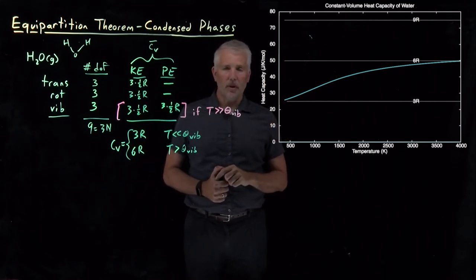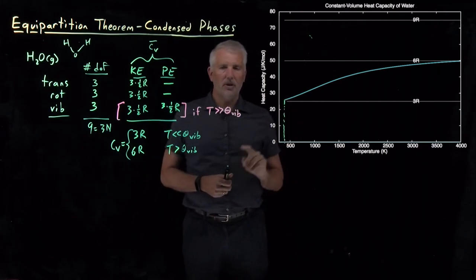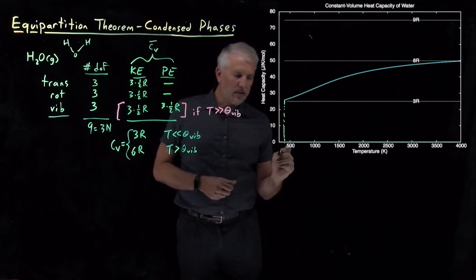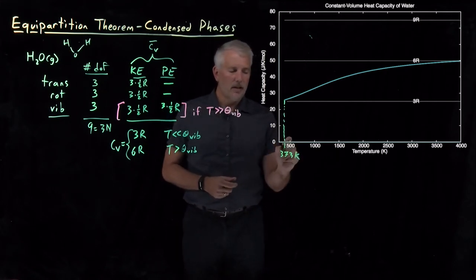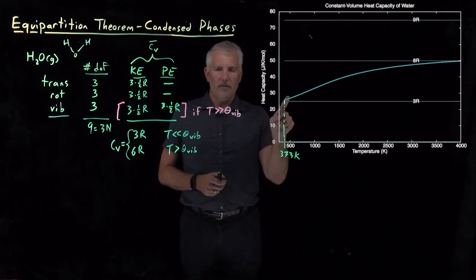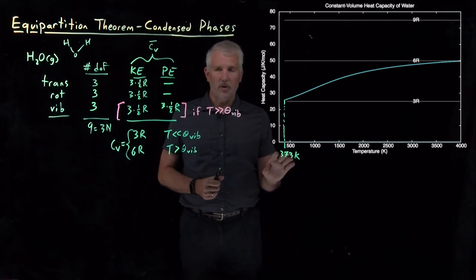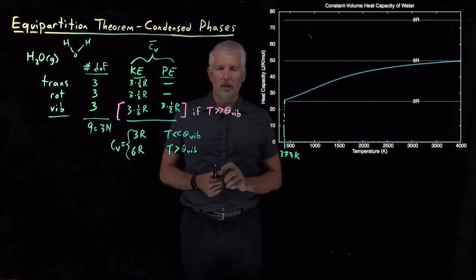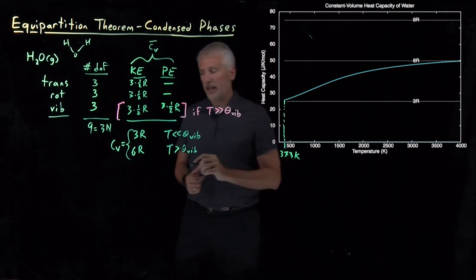We might ask whether the data continues to approach 3R at even colder temperatures, but we run into a problem. The data stops a little below 400 Kelvin — specifically at 373 Kelvin, which is 100 degrees Celsius. At one atmosphere, we don't have gaseous water below that temperature because water condenses to form a liquid at its boiling point. Below this point, we'd be plotting data for liquid water, not gaseous water.